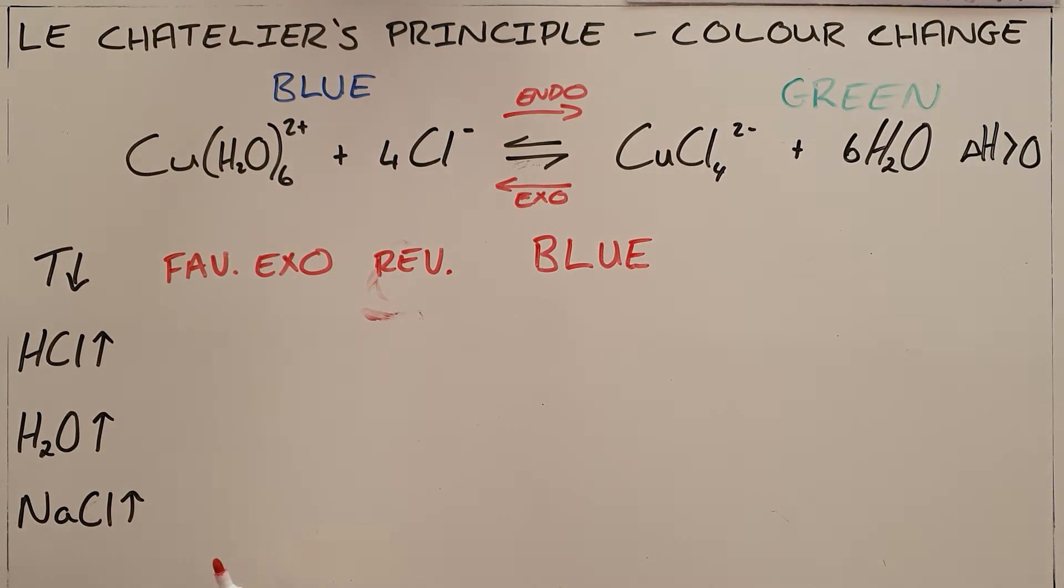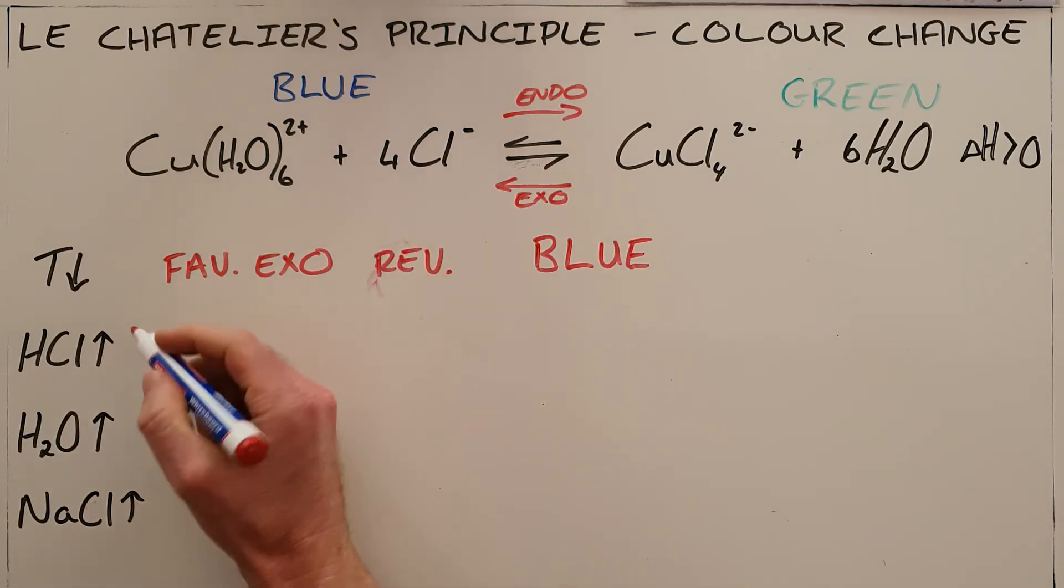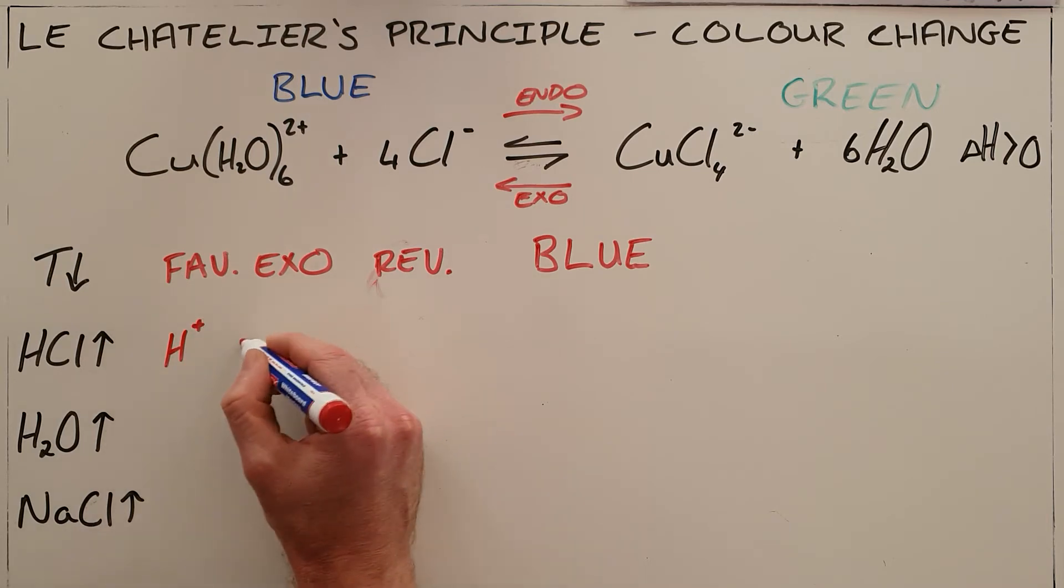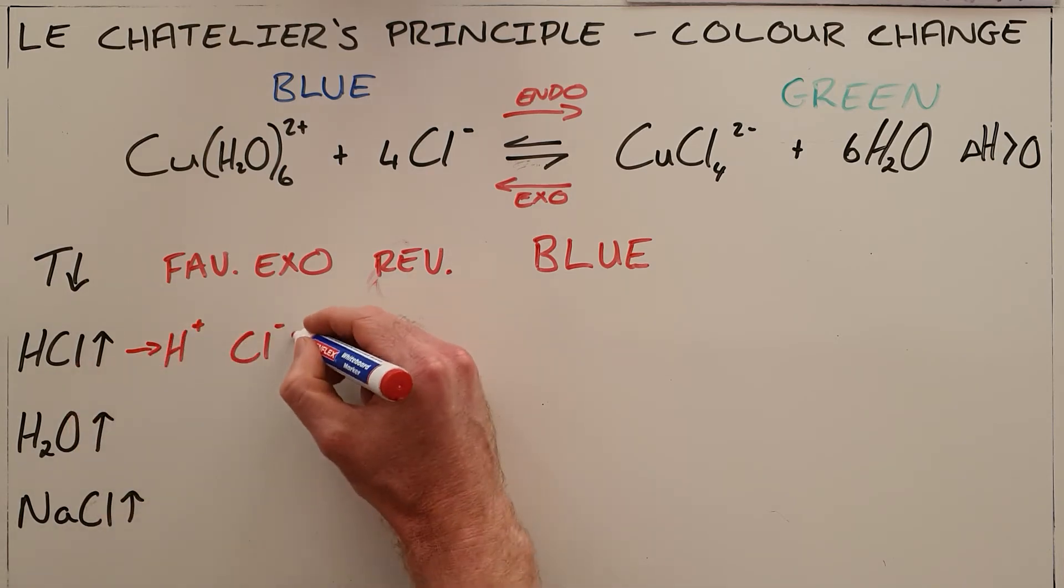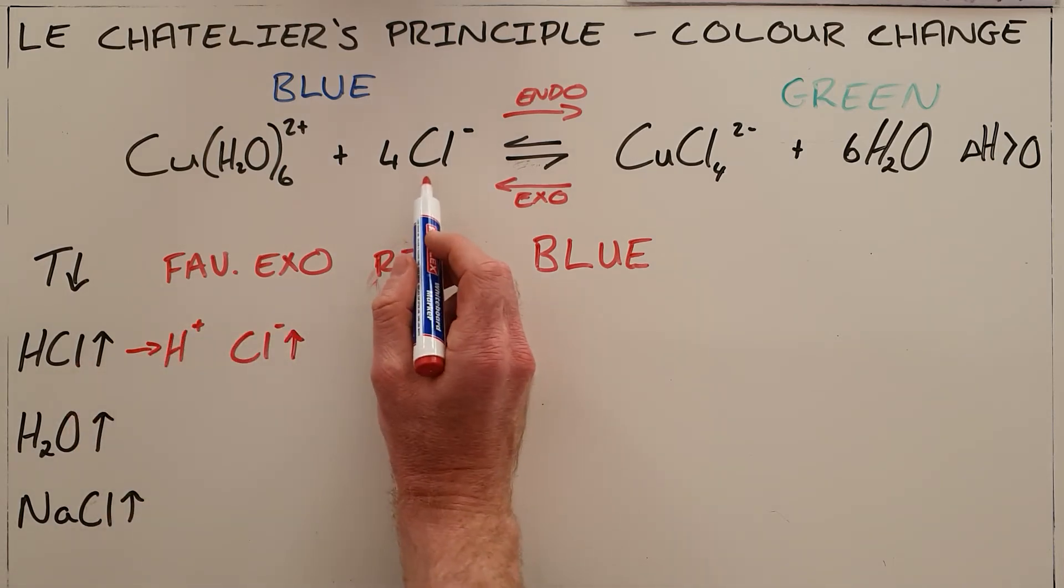The next change asks what would happen if hydrochloric acid, HCl, were added to this mixture. And what we need to remember is that ionic compounds ionize in water, which means that this would break apart into hydrogen ions and chlorine ions. So what this question is actually saying is that by adding HCl, we are increasing the concentration of chlorine.